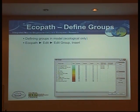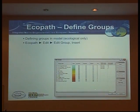Whether it's a consumer — you can see how easy it is to fill this in, it's just a set of ticks: it's a consumer, it's a producer, it's a detritus group. And then it fills in these values for you.